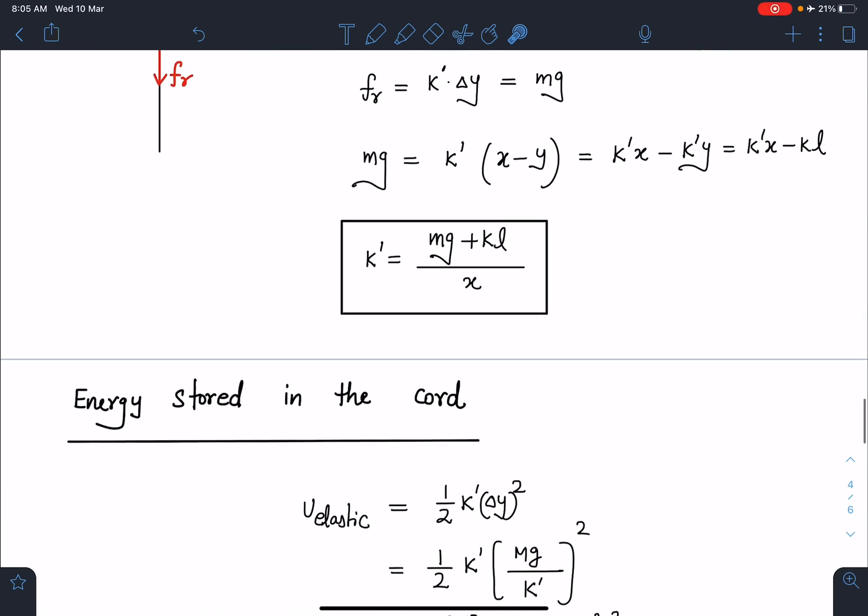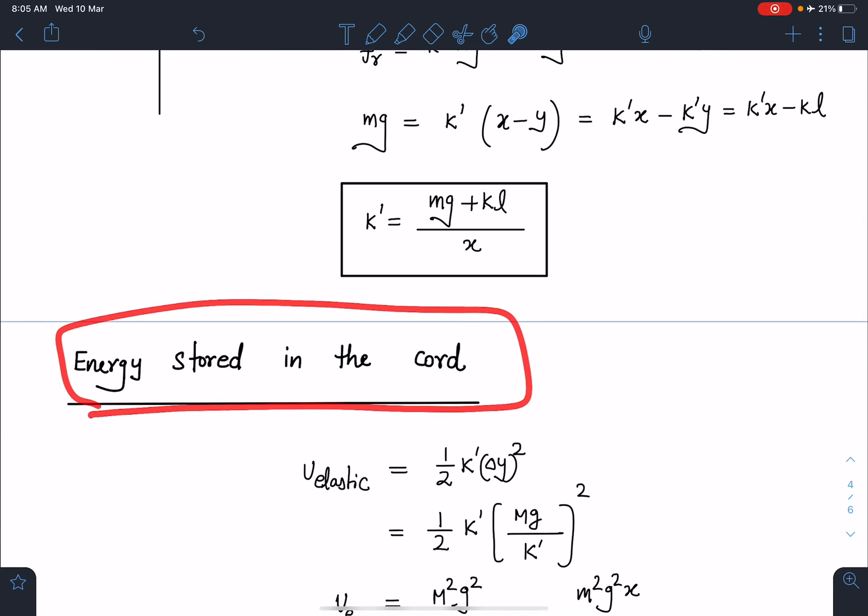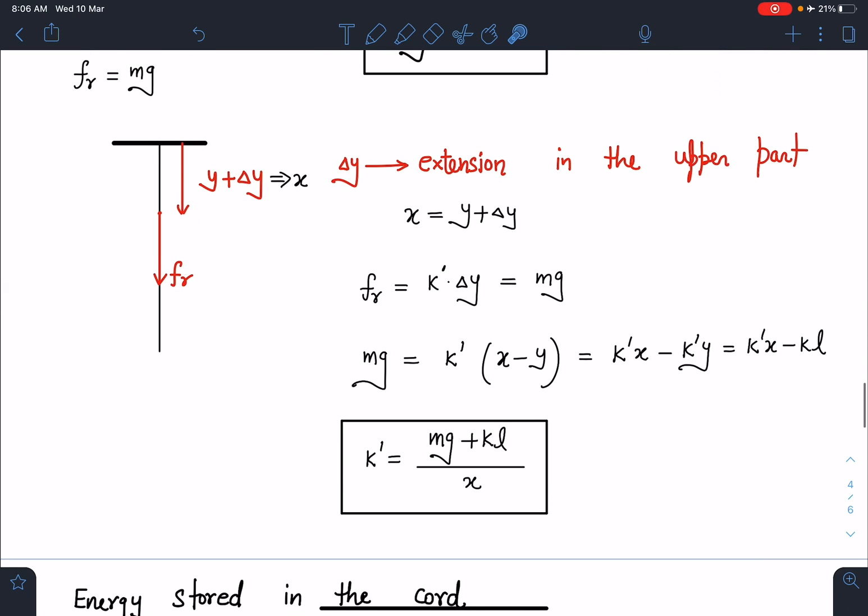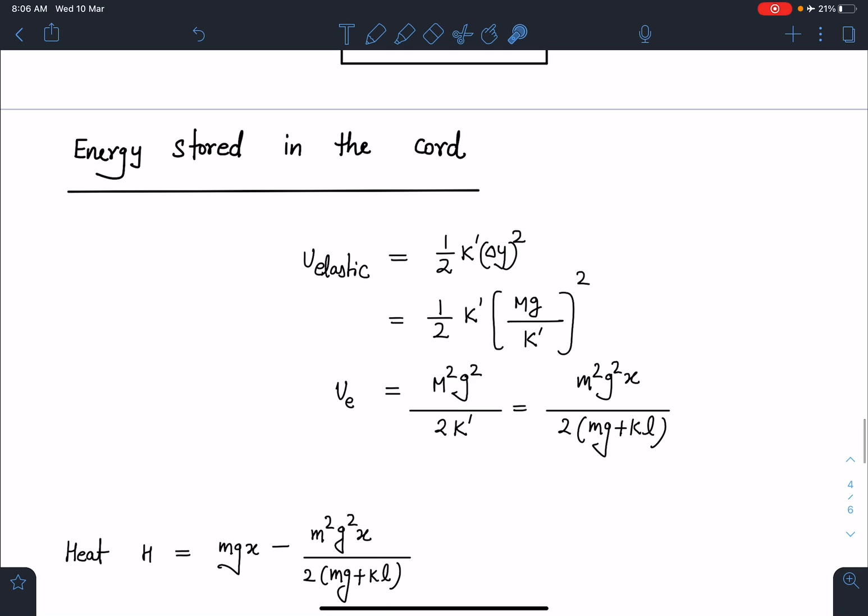Now energy stored in the chord is simply half k dash times delta y squared - k of upper part and delta y is the change in length of the upper part. This delta y we have seen is mg by k dash, so when I substitute, the elastic potential energy becomes m squared g squared by 2k dash.